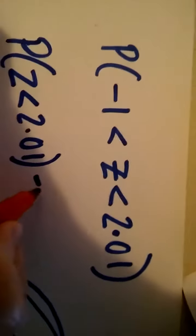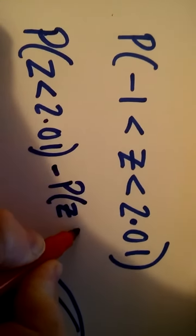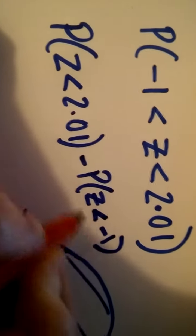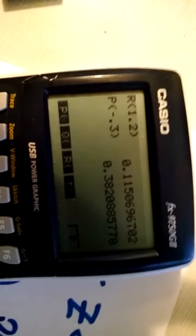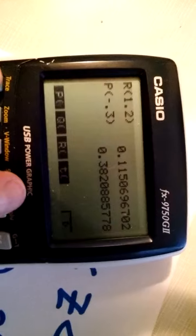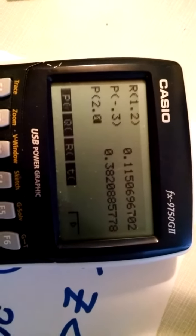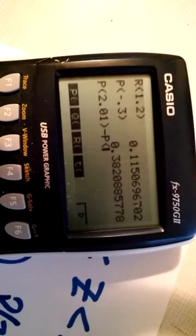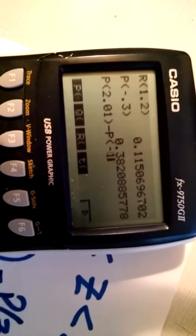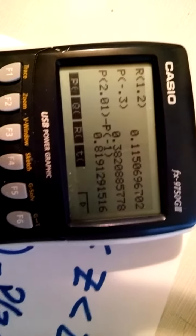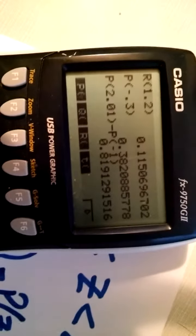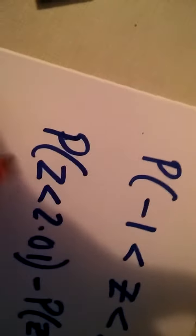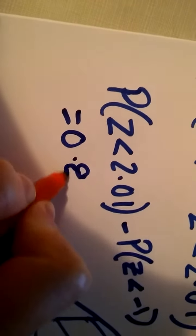So Z is less than minus one, pop it into the machine. We want less than which is the P button, 2.01 and the bracket, take away P again minus one, less than minus one and it'll give me the area in the middle 0.819. So that is this shaded area here 0.819.